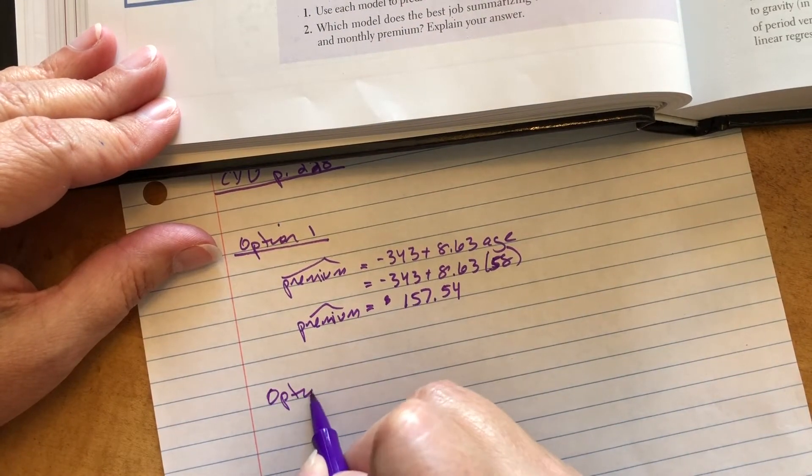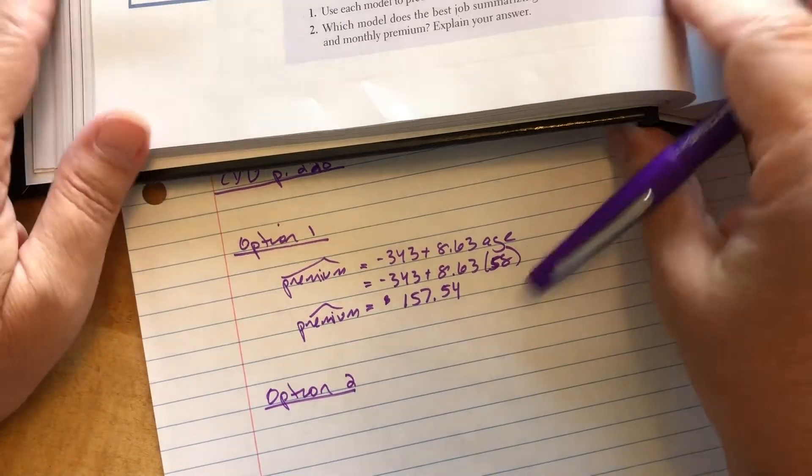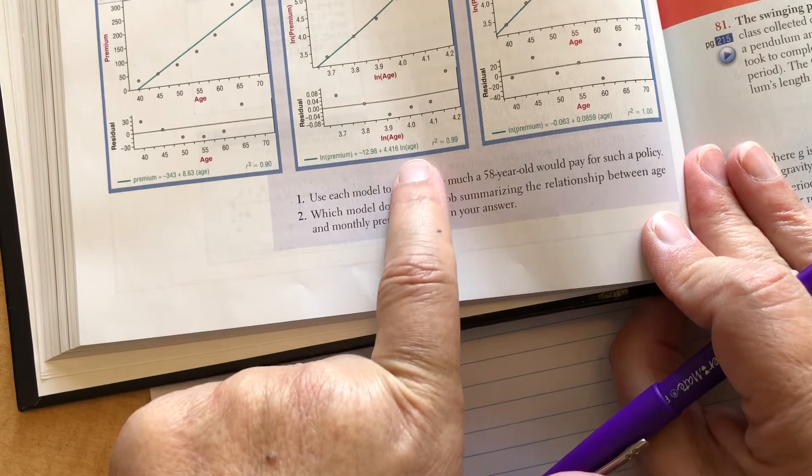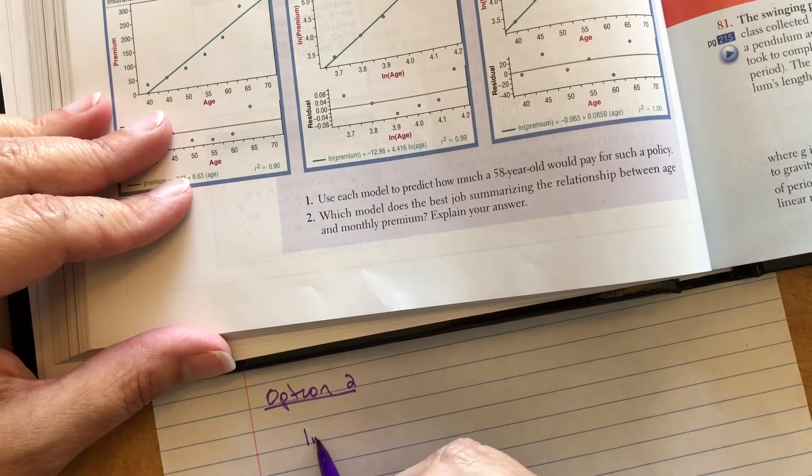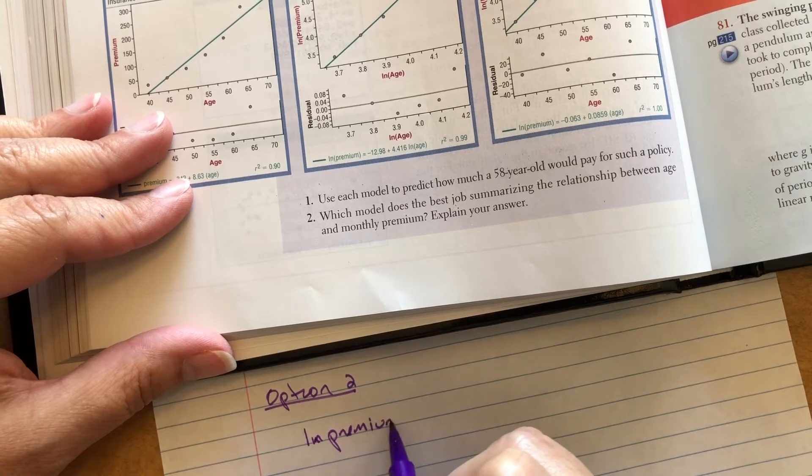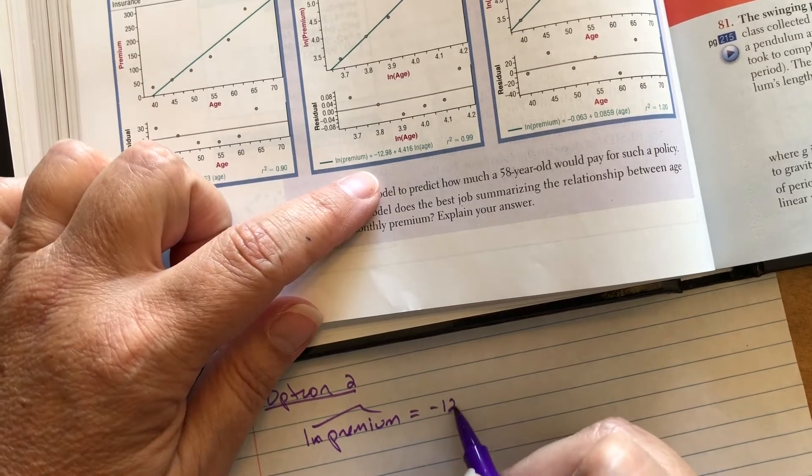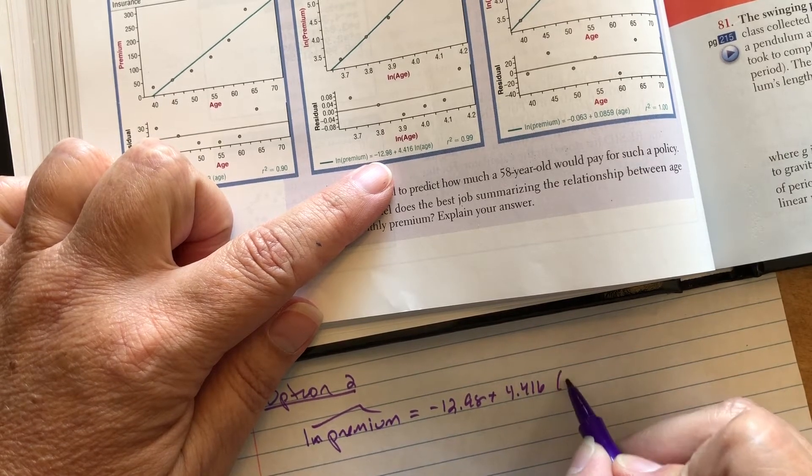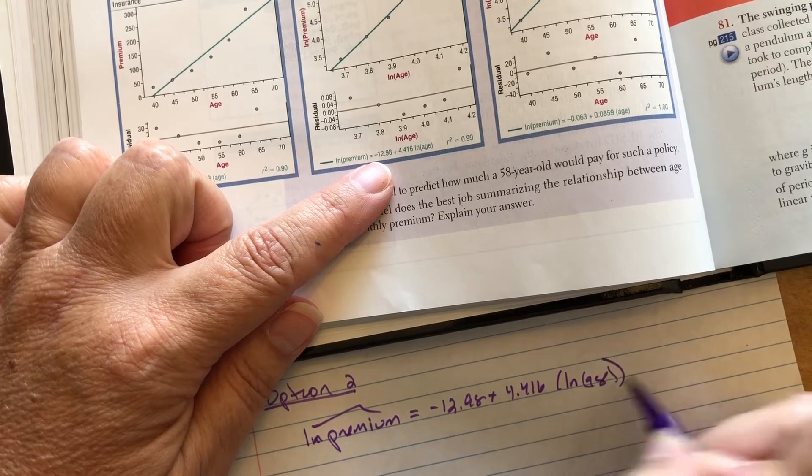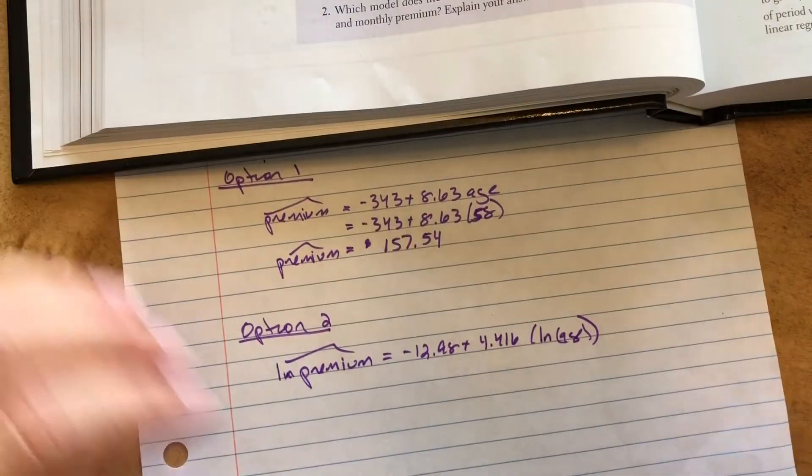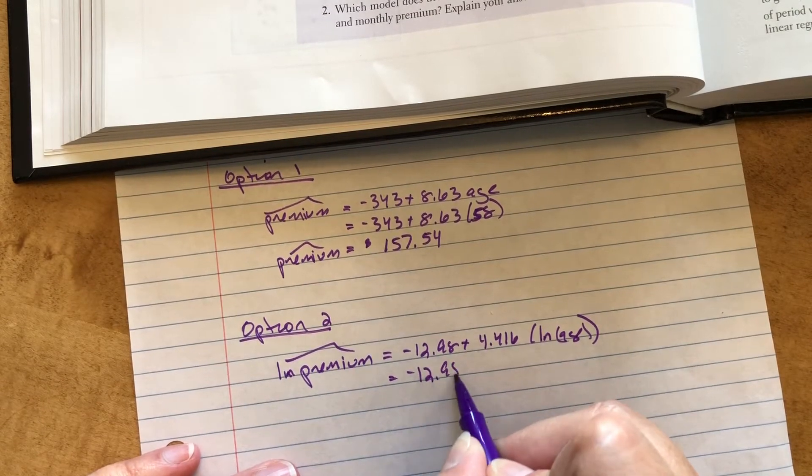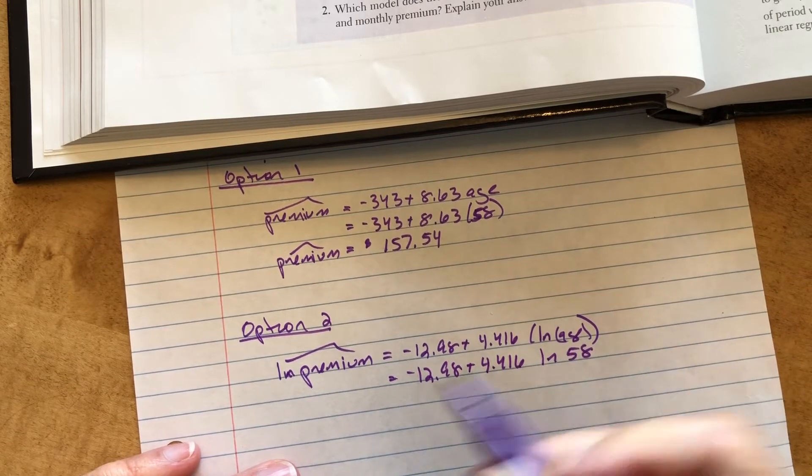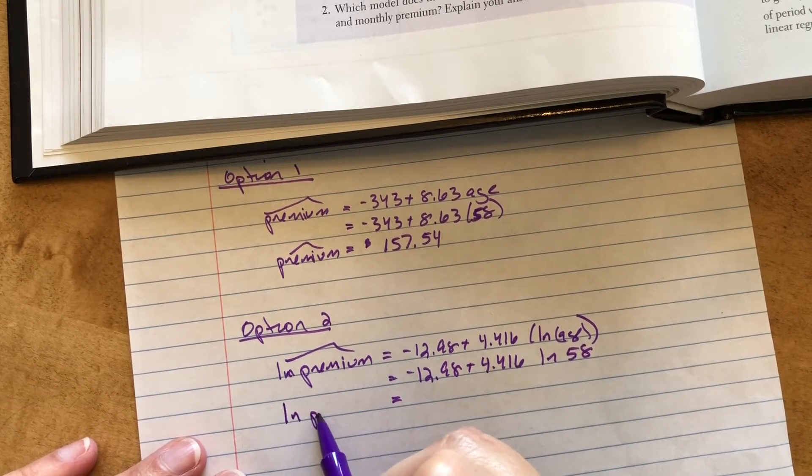Option two. Option two, my equation involves the natural log of the premium and the natural log of the age. So now I have to do natural log of premium equals, what's that, negative 12.98 plus 4.416 times the natural log of the age. So now I need to plug in the natural log of 58.